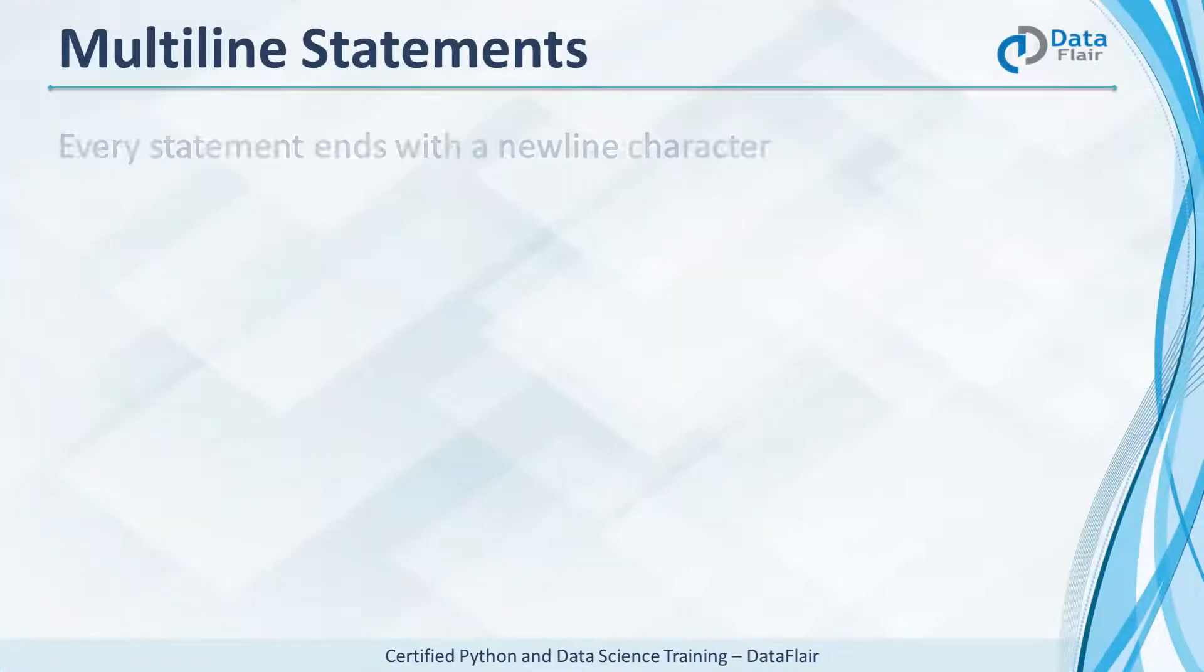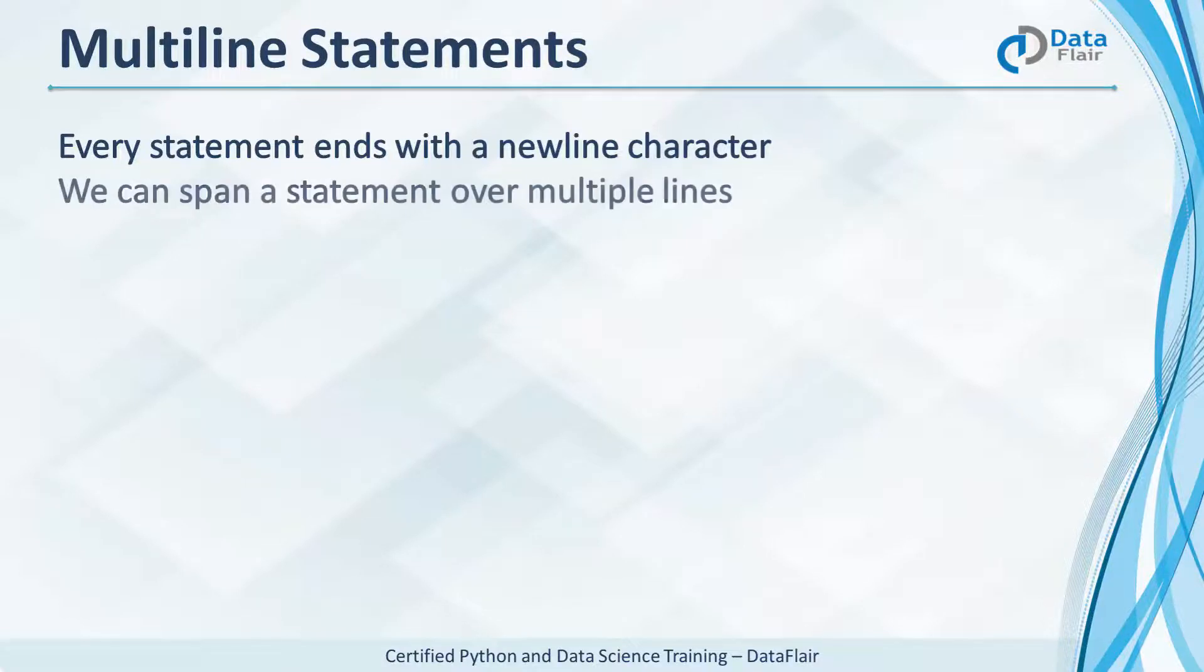In Python, there's a new line character after each statement. But we can also extend a statement over multiple lines using a backslash. The first three lines here are a single statement. They set the value of a to 10 plus 20 which is 30.